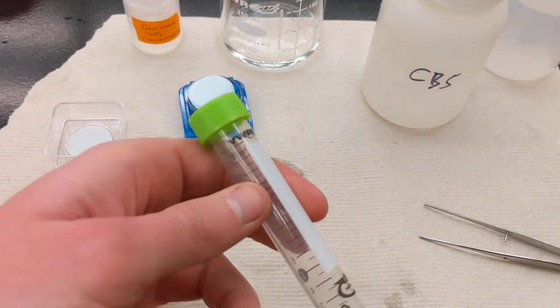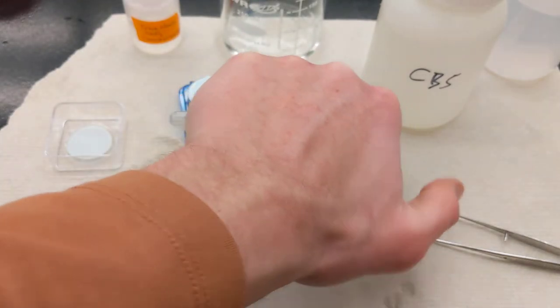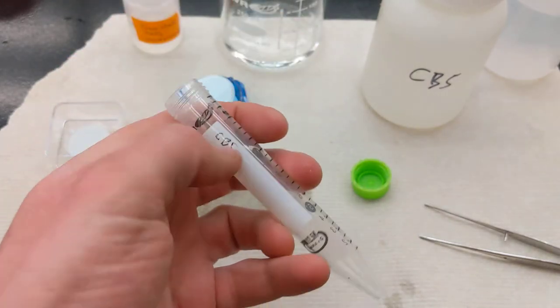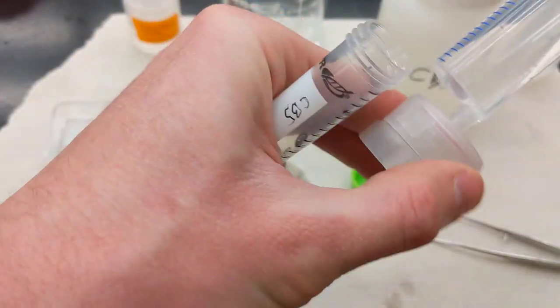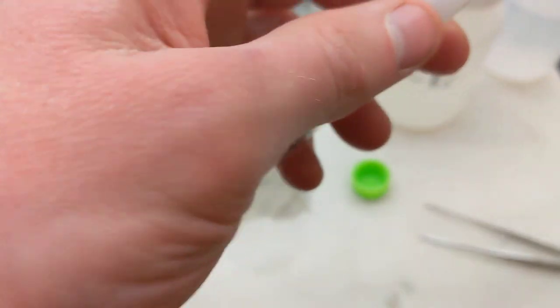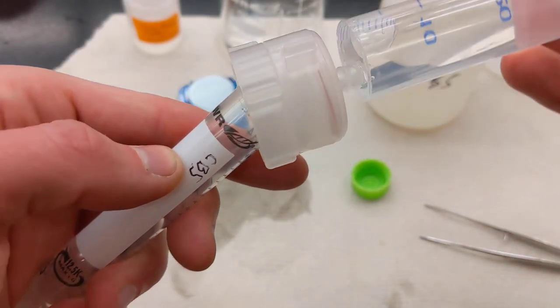I'll take my 15 milliliter falcon tube, undo this cap. Again, be careful you don't contaminate this. Make sure you've labeled this. Attach your filter here, and then make sure you put the spout of the filter directly in the center.